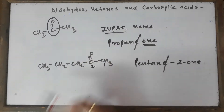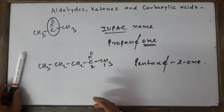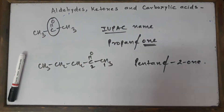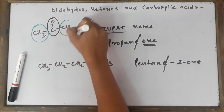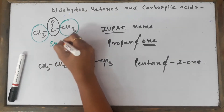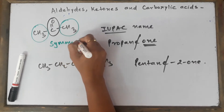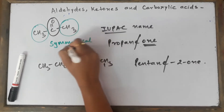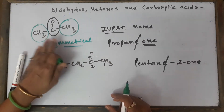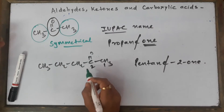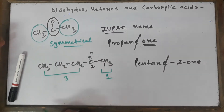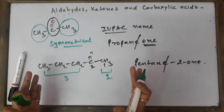So over here, we have taken two simple examples. If you look at this first one, it has got the same number of carbon atoms on both sides. Such a ketone which has similar groups on both sides of the carbonyl group is called a symmetrical ketone. Whereas this one has got one carbon atom on the right side and three carbon atoms on the left side, so this is an unsymmetrical ketone.